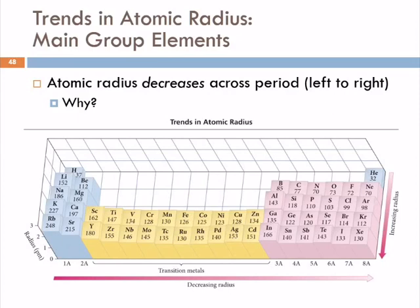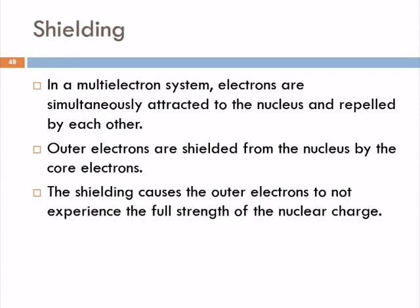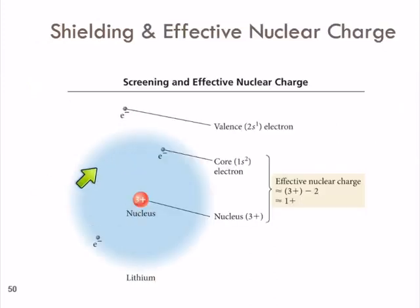The quantum mechanical model helps to explain this. Well, we've got shielding. So all of these, except for hydrogen, are multi-electron atoms. Those core electrons shield the valence electrons from the charge of the nucleus. The shielding causes those outer electrons to not experience the full charge that's on the nucleus. So here's an illustration of that. Here we've got, this is lithium. So we've got 3 electrons. Here's the valence electron.